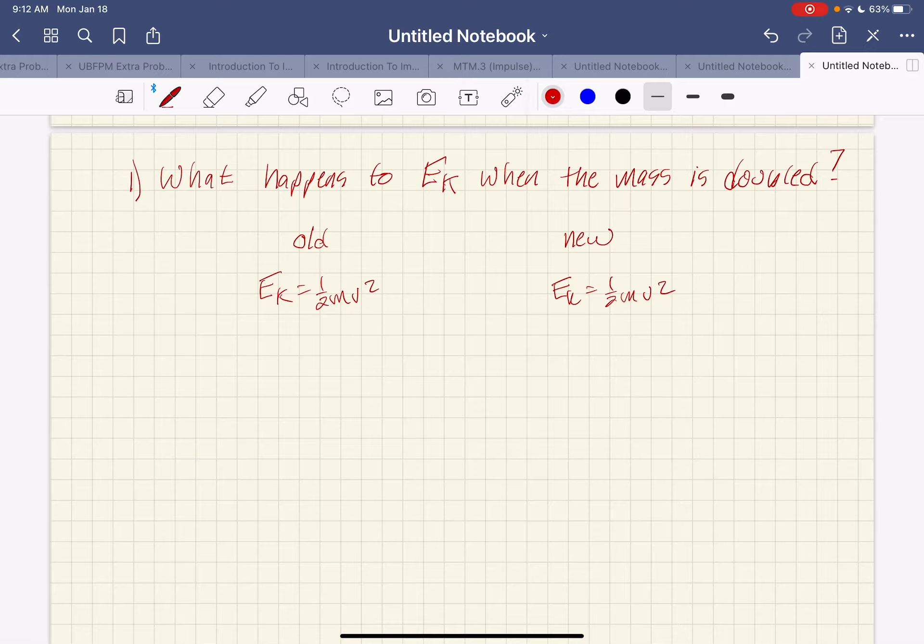So, my kinetic energy is, instead of one half, I put 1, because it doesn't change. The mass is 1, and the velocity is 1. So, my kinetic energy is 1, because it's easier to compare things to 1.